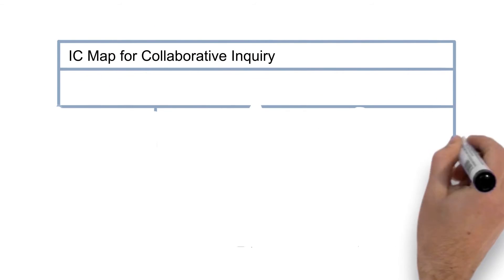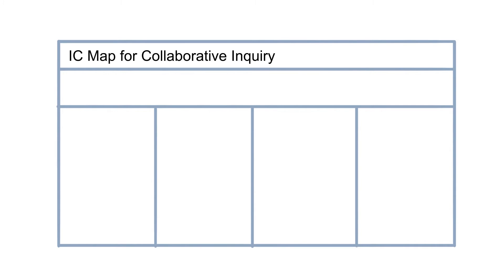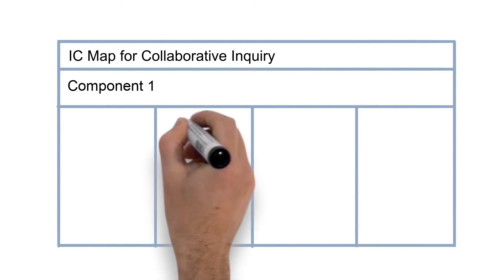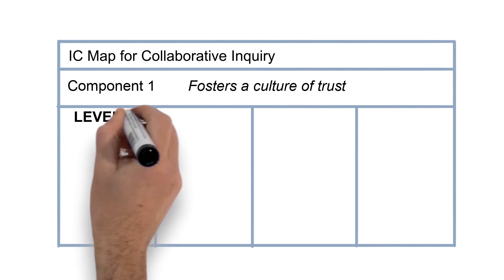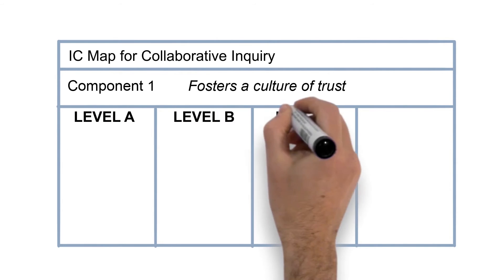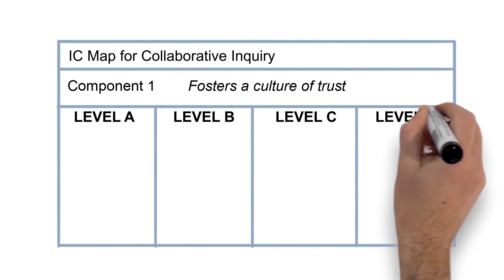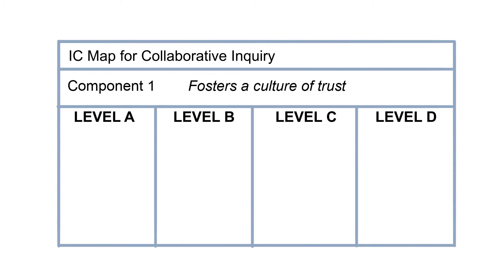Let's visualize how to properly perform collaborative inquiry among members of a school data team by drawing an IC map. The first component, or major feature of implementing collaborative inquiry, is to foster a culture of trust. Using a configuration map, we are able to monitor the different levels or variations of building trust — the ideal, acceptable, and unacceptable variations of program implementation. Level D represents the unacceptable activities associated with the component, whereas Level A is the ideal.